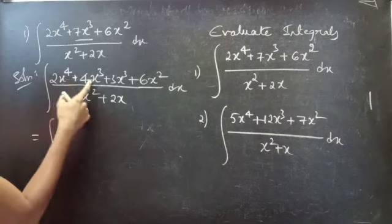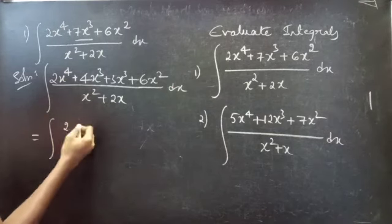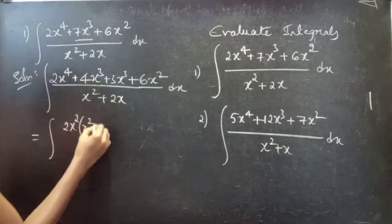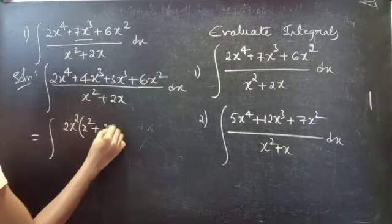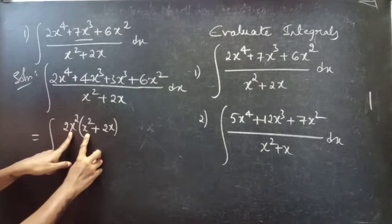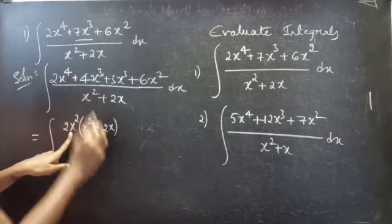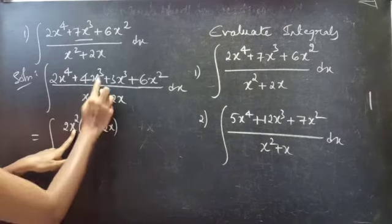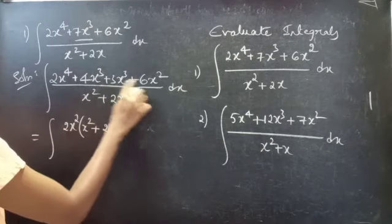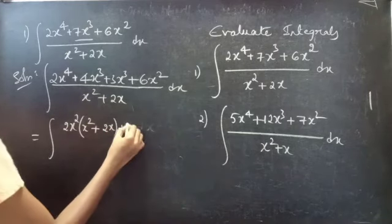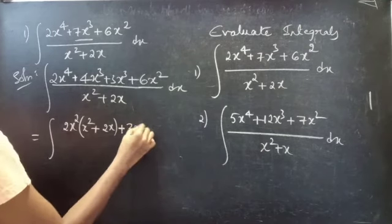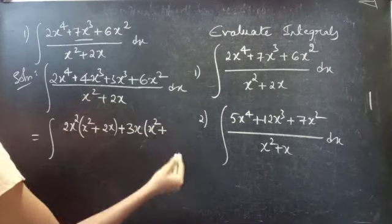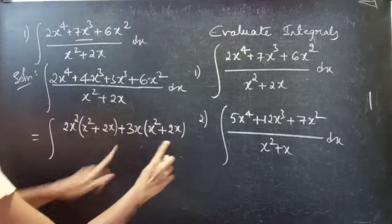In the first two terms we can take 2 and x² common, so that we get x² + 2x. So 2x² × x² = 2x⁴ and 2x² × 2x = 4x³, giving us 2x²(x² + 2x). In the next two terms we take 3 and x common, giving us x² + 2x as well.